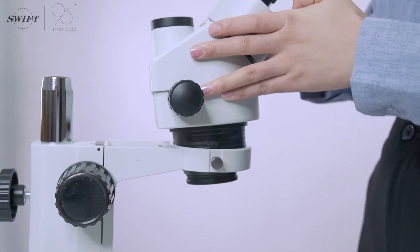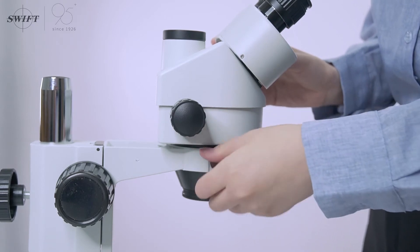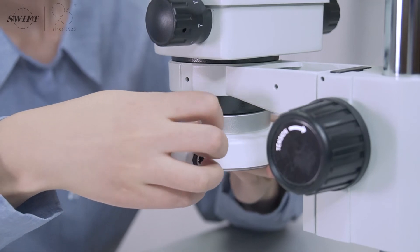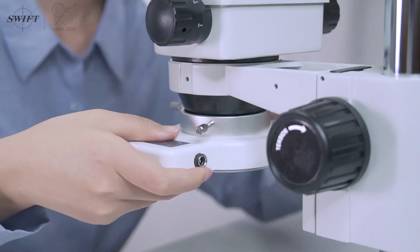Put the lens body main unit into the focusing mechanism and tighten the thumbscrews. Install the ring light under the mirror body while tightening the screws and connecting the power cord.